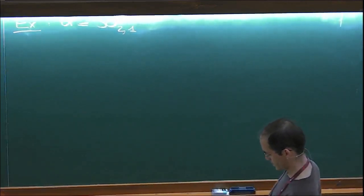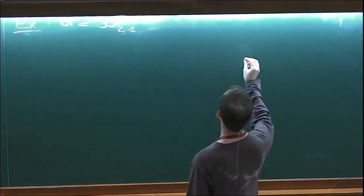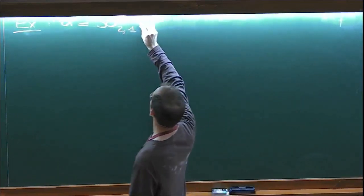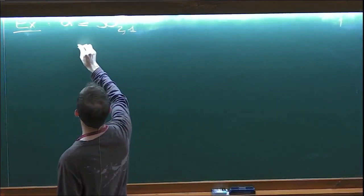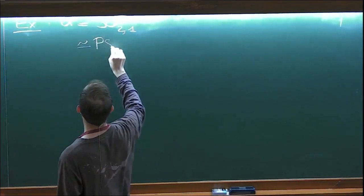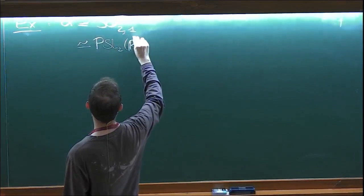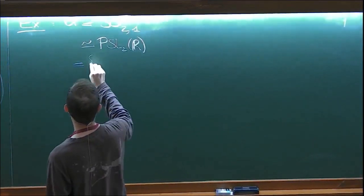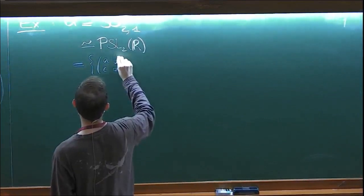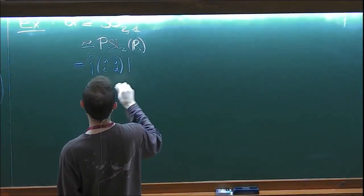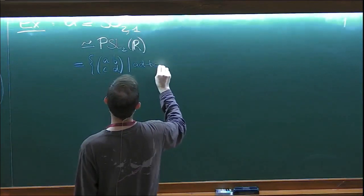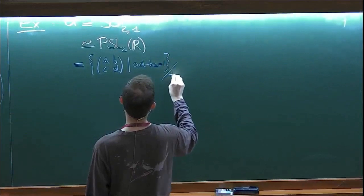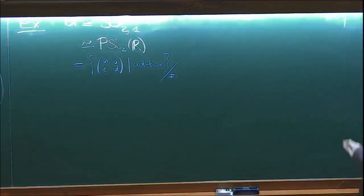Let me try and draw a concrete picture of SO(2,1). Most of the time we will be thinking of it as PSL2 of R. That's the group of matrices (A, B, C, D) such that AD - BC equals one, up to sign. And what this looks like is - instead of writing it like this, I'll just say the determinant should be positive, and we mod out by R star.